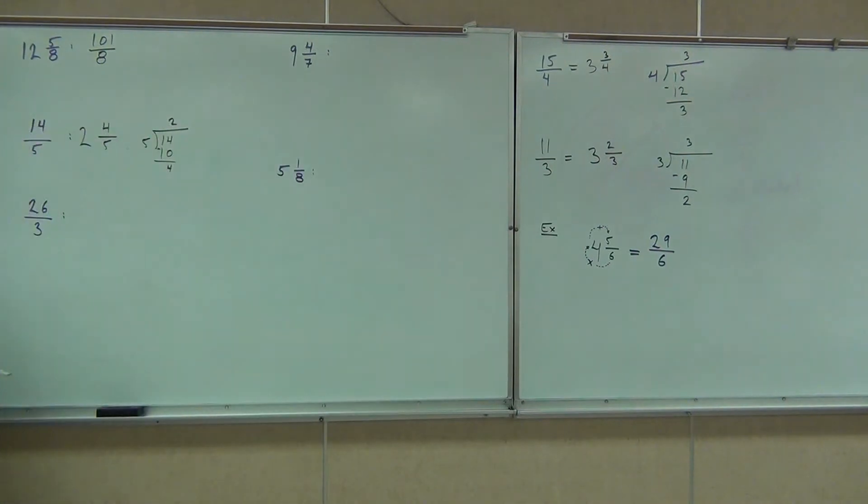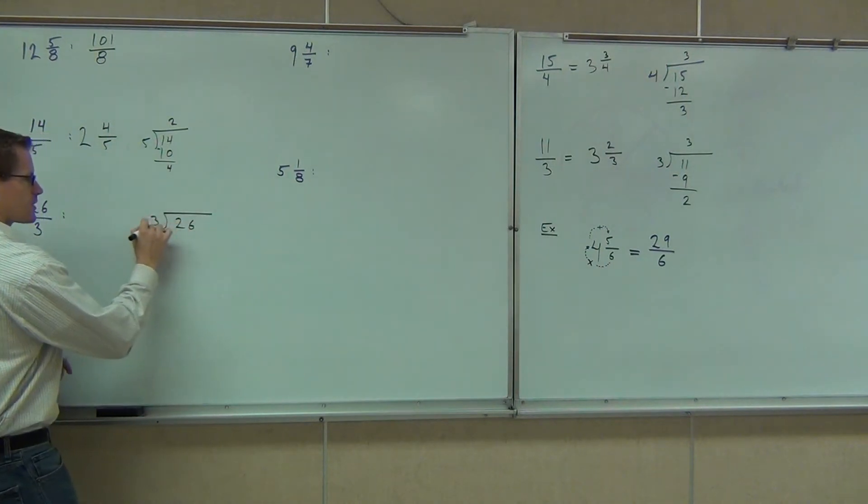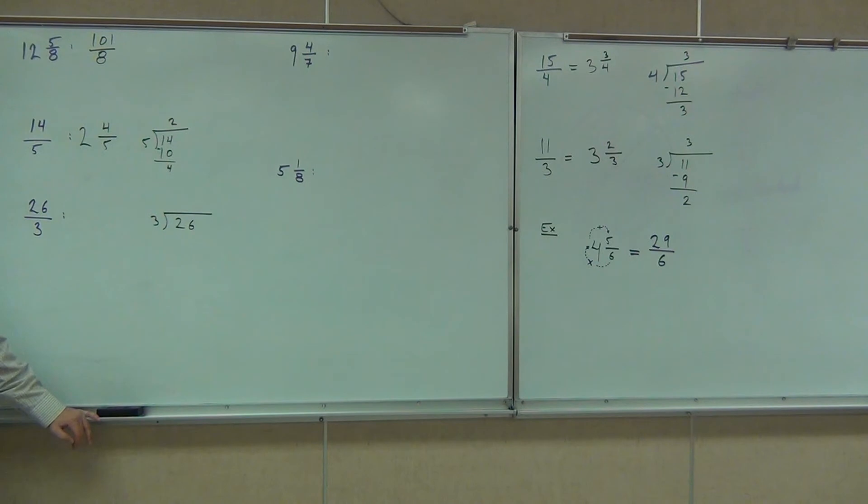Next one, do we have a mixed number or is this improper? Which is this? Improper, very good. So when we divide, we'll have 26 divided by 3. 3 goes into 26 how many times? 8 times.